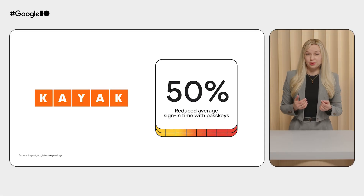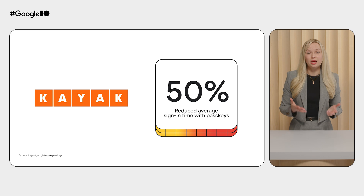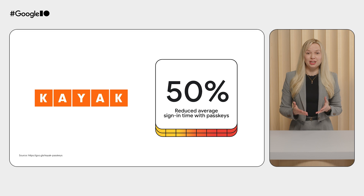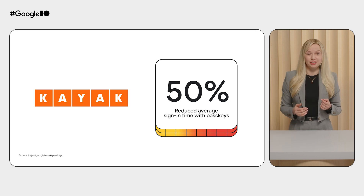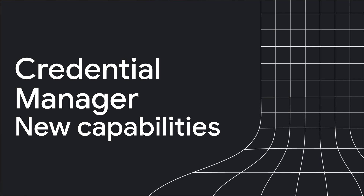Kayak, one of the leading travel search engines, helps users find the best deals on flights, hotels, and rental cars. Last year, Kayak integrated Passkeys into its Android and web apps. As a result, Kayak reduced the average time it takes users to sign in by 50% and also saw a decrease in support tickets. In addition to Passkeys, Kayak offers sign-in with Google as the cross-platform solution for account creation and authentication. The majority of Kayak's users prefer sign-in with Google due to its seamless and secure user flow. Many apps have already seen significant benefits after integrating the Credential Manager API.